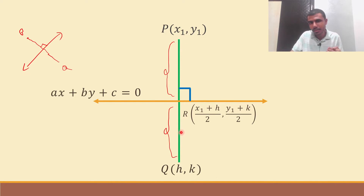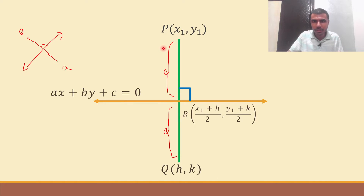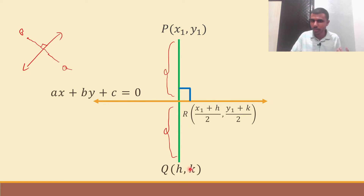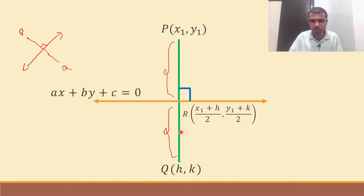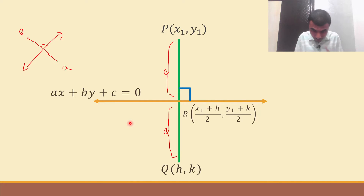Since Q is the image of P, this distance and this distance are the same. Because Q is the image, this distance and this distance are equal. That means if I take the point where line segment PQ meets this line and call it R, then PR equals RQ — meaning R is the midpoint of PQ. The coordinates of R are x1 plus h by 2, and y1 plus k by 2. And R lies on the straight line ax + by + c = 0.